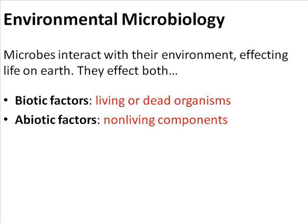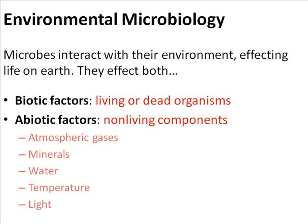A brief list of abiotic components includes the atmospheric gases, the minerals found in the Earth, the water — which all organisms use — the temperature, which microbes affect in the Earth's atmosphere, and light, which is very important for producers of organic matter. Today I'm going to show you how these organisms interact with the abiotic factors.